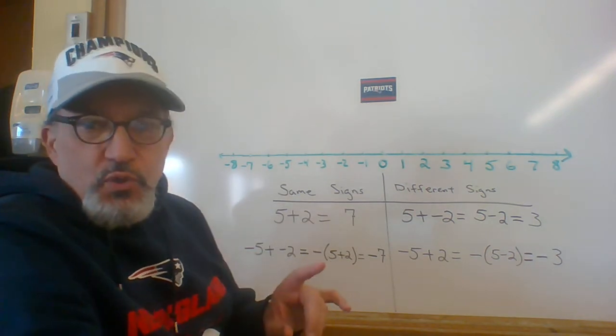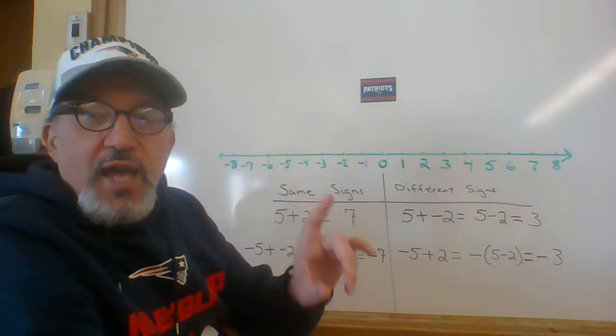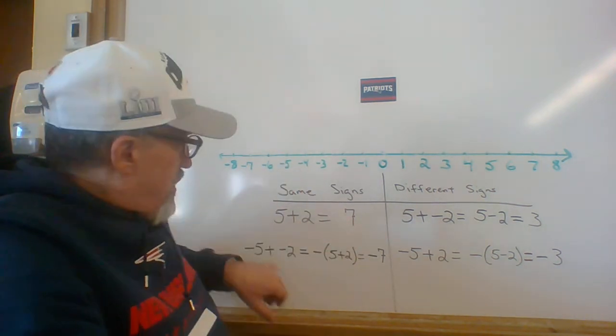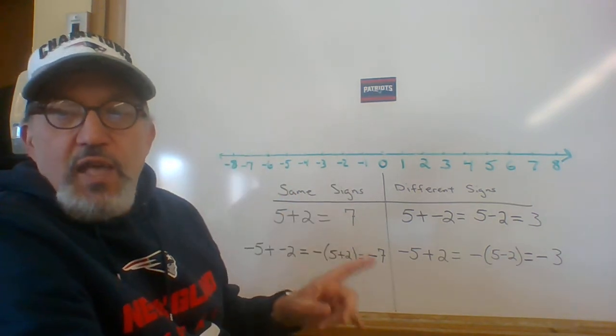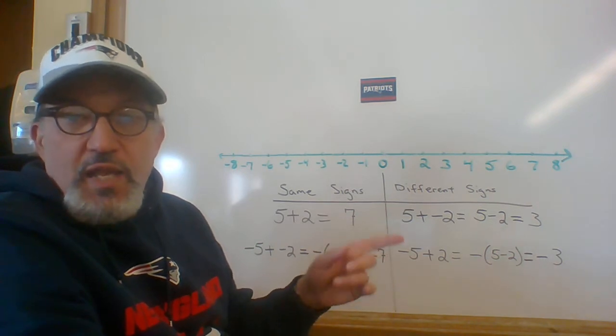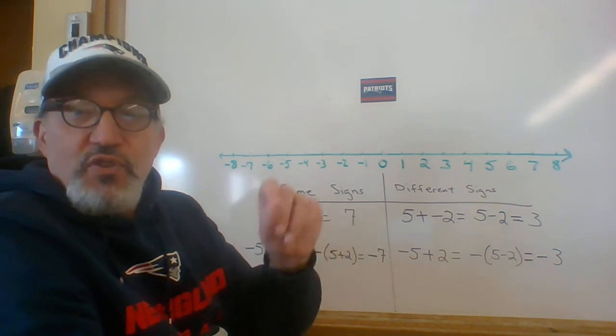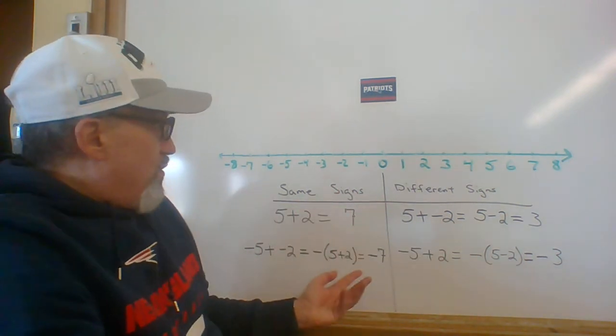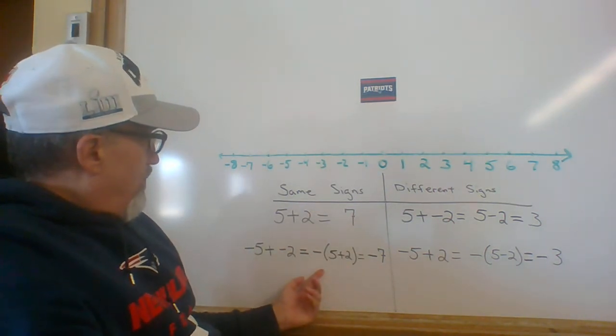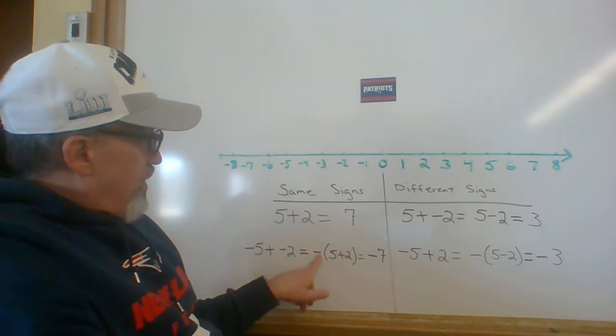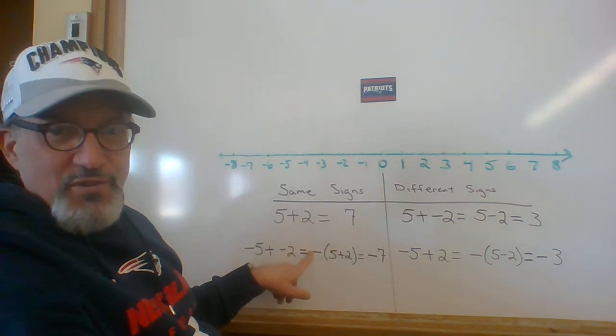When we add negative 5 and negative 2, and again, this is the rule for when the signs are the same for the two numbers. Negative 5 plus negative 2: add their absolute values. The absolute value of negative 5 is 5, the absolute value of negative 2 is 2. Add 5 and 2, but then give the sum the sign that the two original numbers have. So rather than 7, the sum is negative 7. And notice the symbolism that I wrote here: negative 5 plus negative 2 equals the opposite of 5 plus 2. Do the 5 plus 2, but then make it negative.